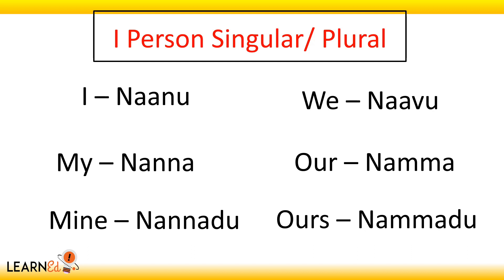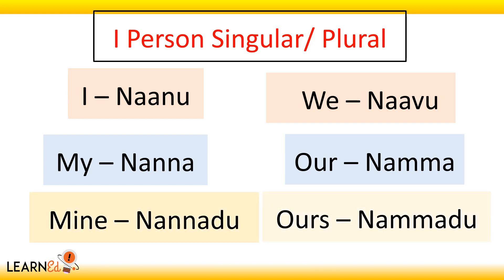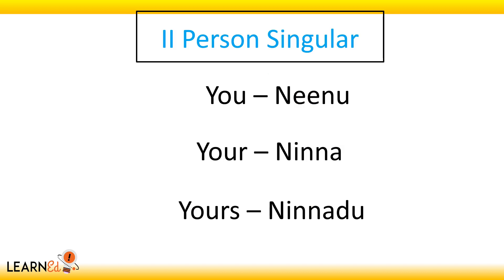Now let's read them together — first person singular and plural. I: nanu. We: naavu. My: nanna. Our: namma. Mine: nannadu. Ours: nammadu.